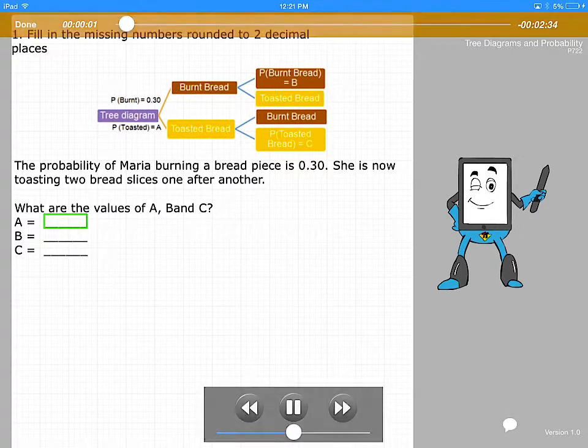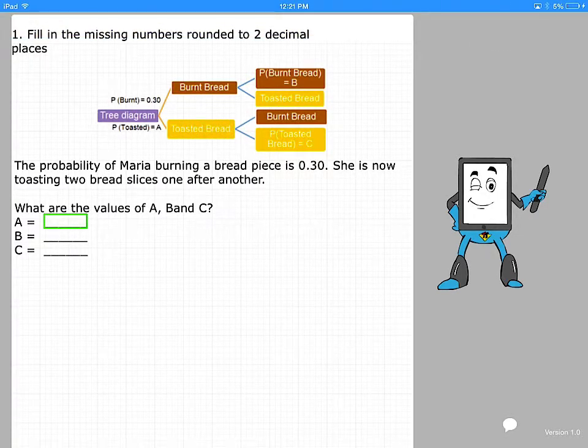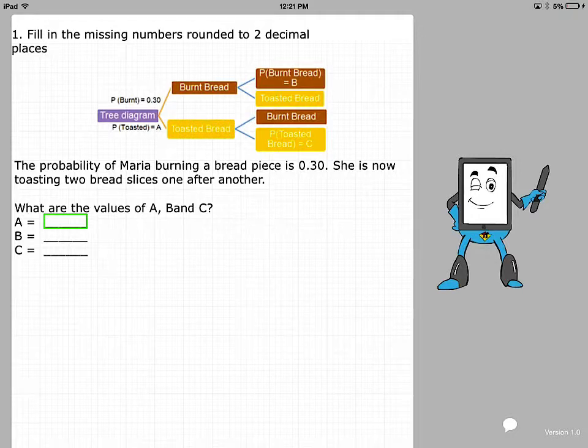Fill in the missing numbers rounded to two decimal places. The probability of Maria burning a bread piece is 0.30. She is now toasting two bread slices one after the other. We must find the values of A, B, and C.